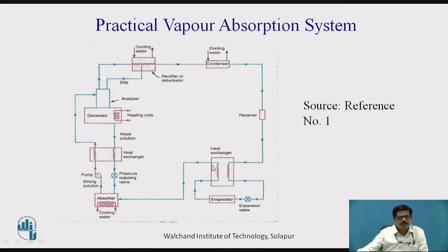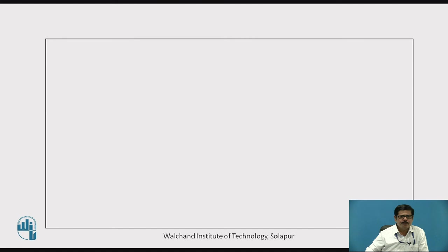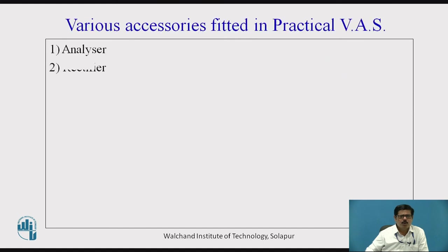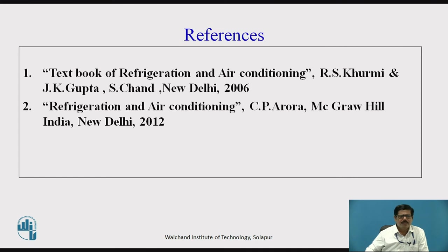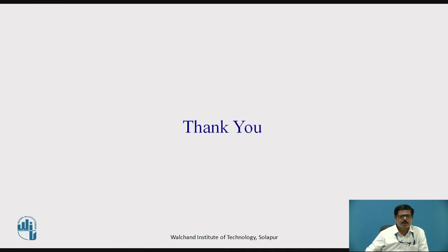At the same time, we are trying to achieve sub-cooling, so the refrigerating effect will also be more. So the other working remains the same as in a simple vapor absorption system. So as we have seen, these are the three accessories which are fitted: analyzer, rectifier, and heat exchanger. We have also studied their function. These are the references. Thank you.